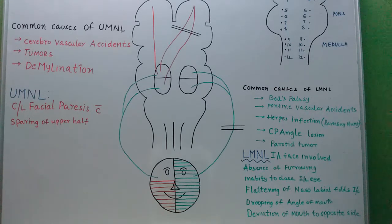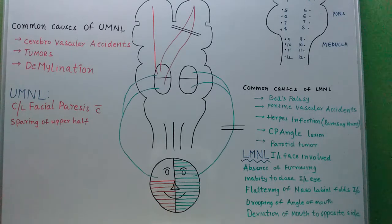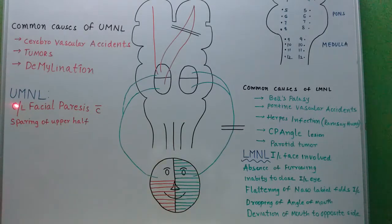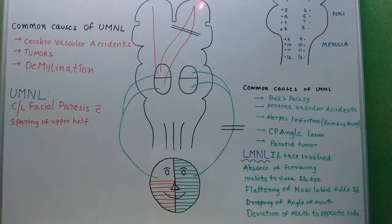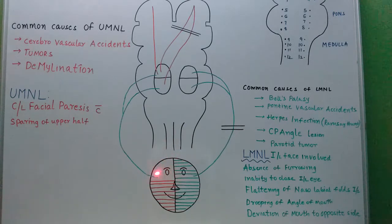Here is the most frequently asked statement in exams: in upper motor neuron lesions of the facial nerve, there will be contralateral facial involvement with sparing of the upper part of the face.